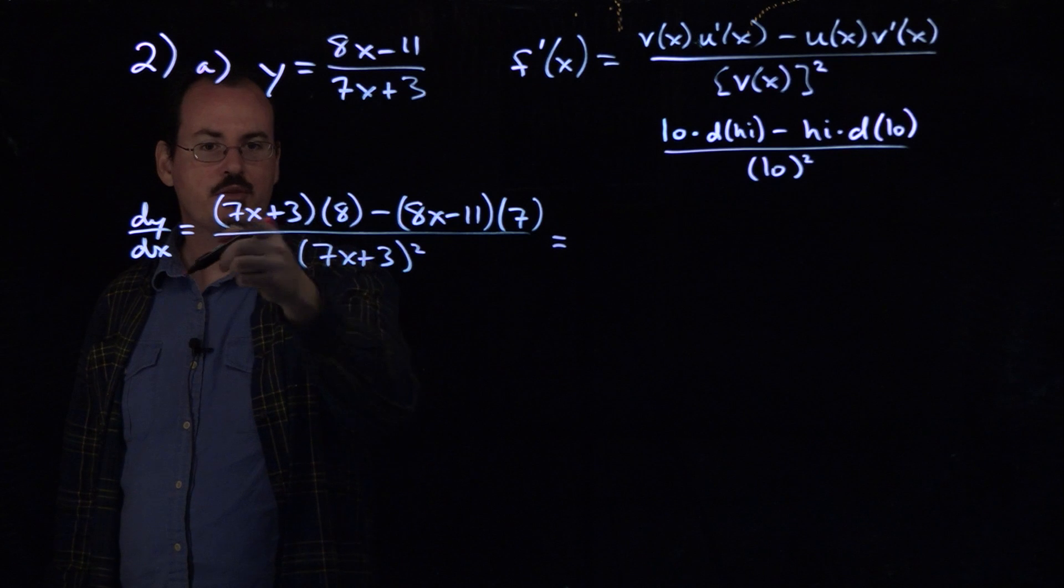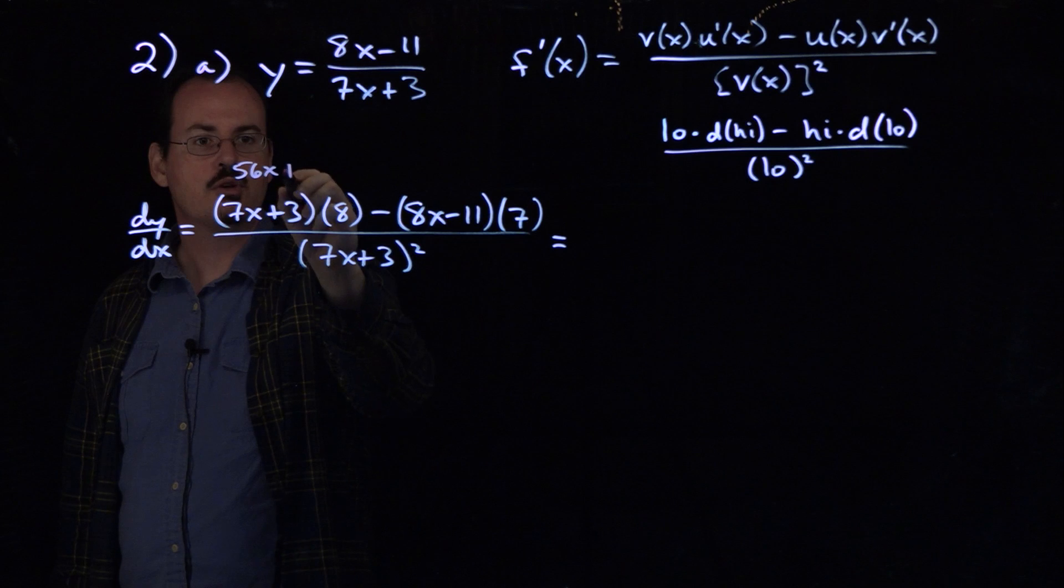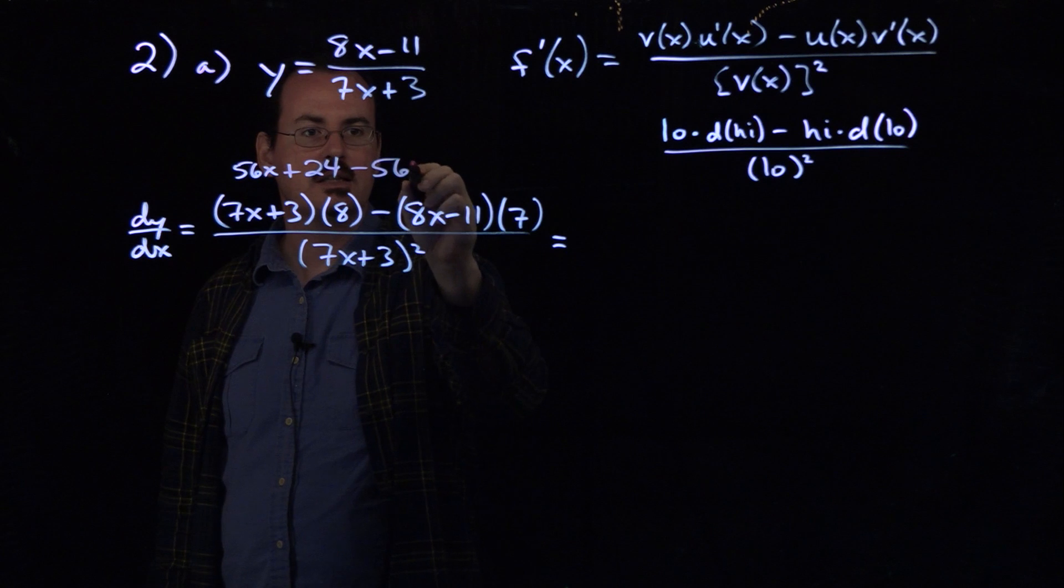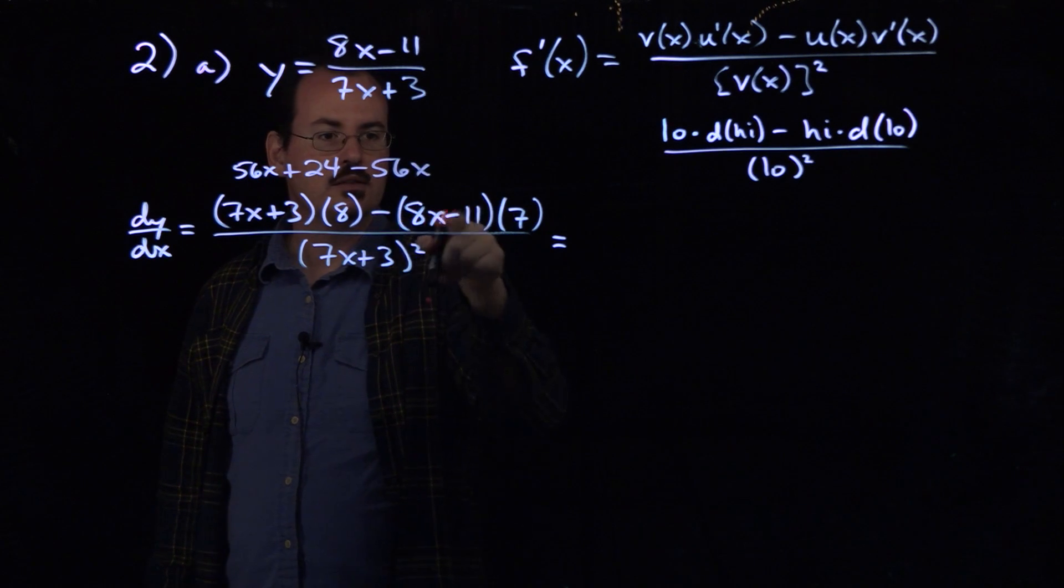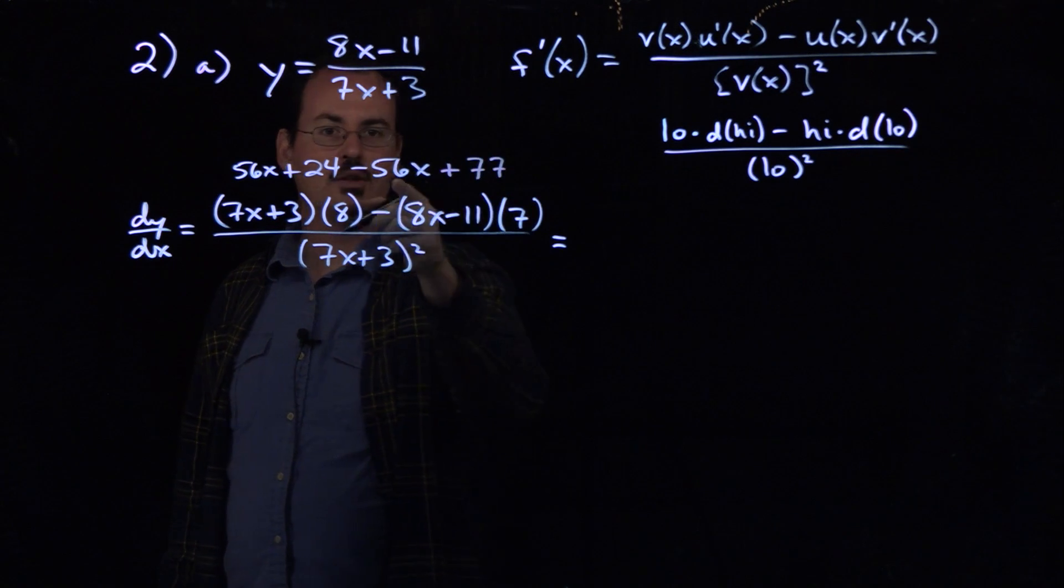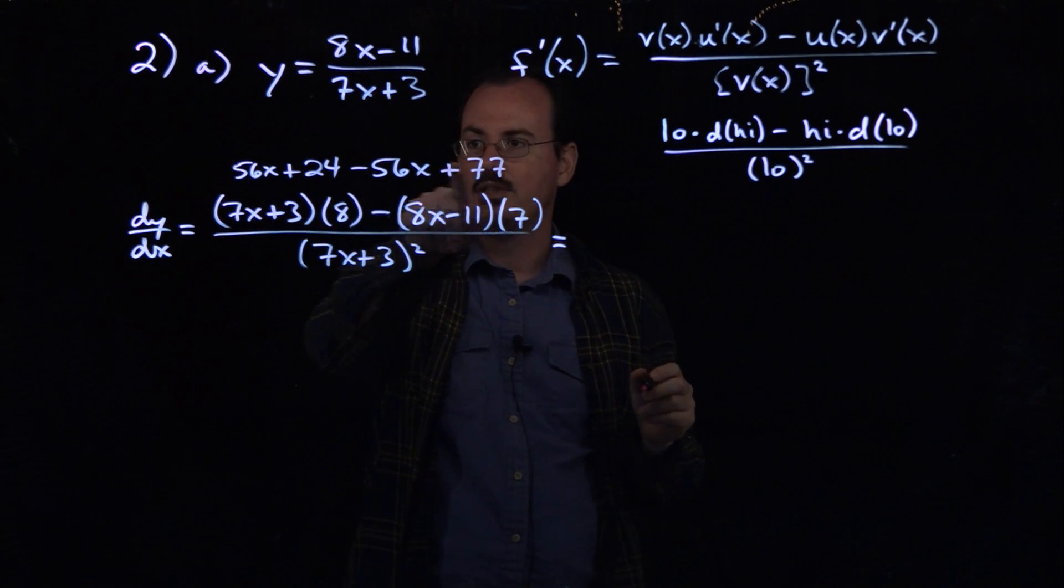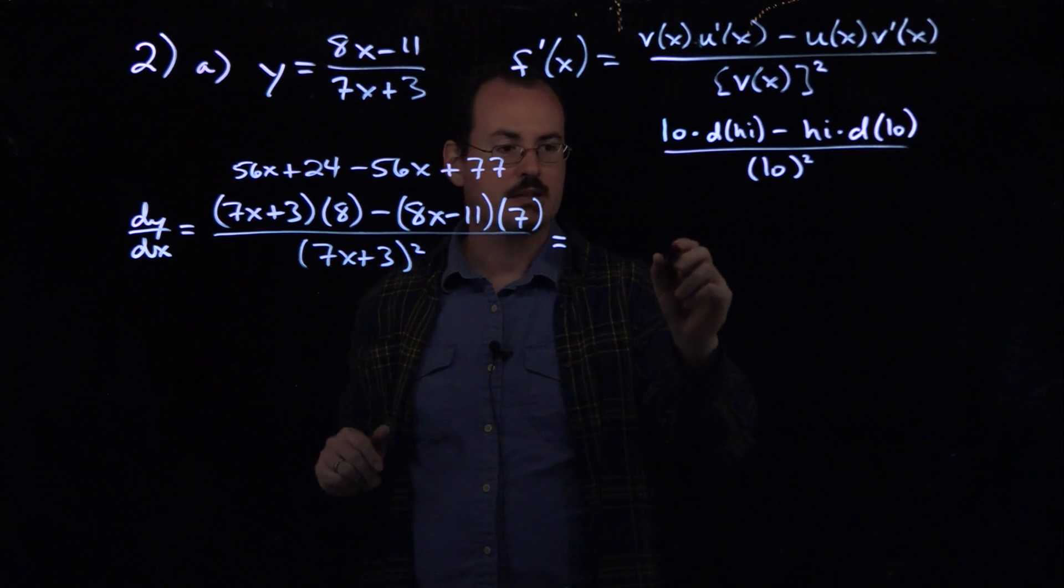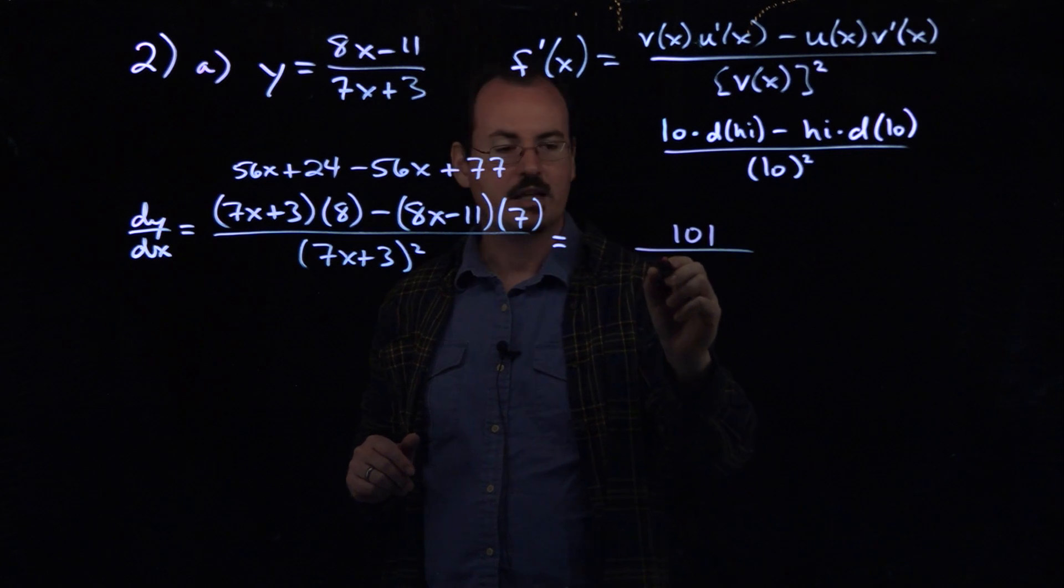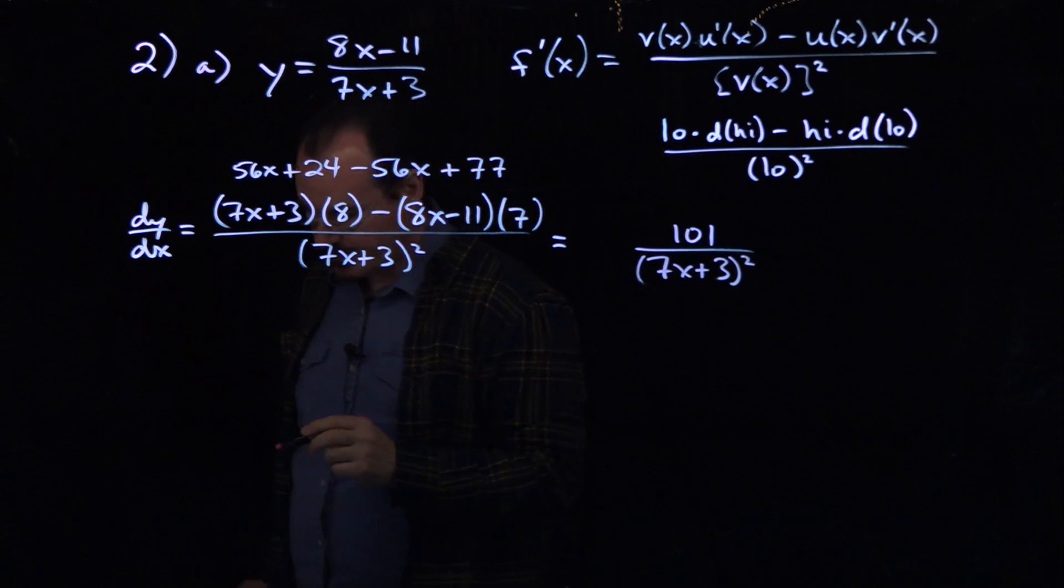And you pretty much always need to go ahead and simplify the quotient rule problems. Let's do the simplification up on the top here. If I distribute the 8 here, I'm going to get 56x plus 24. And then if I distribute the 7, I'm going to get minus 56x, distributing the minus and the 7. And then two negatives again become a plus, so I get plus 77. So notice that those two x terms are going to cancel. So when we simplify this, all we're going to have in the numerator then is 77 plus 24, that's 101. So we'll have 101 over 7x plus 3 squared. So there's our final simplified derivative for that one.